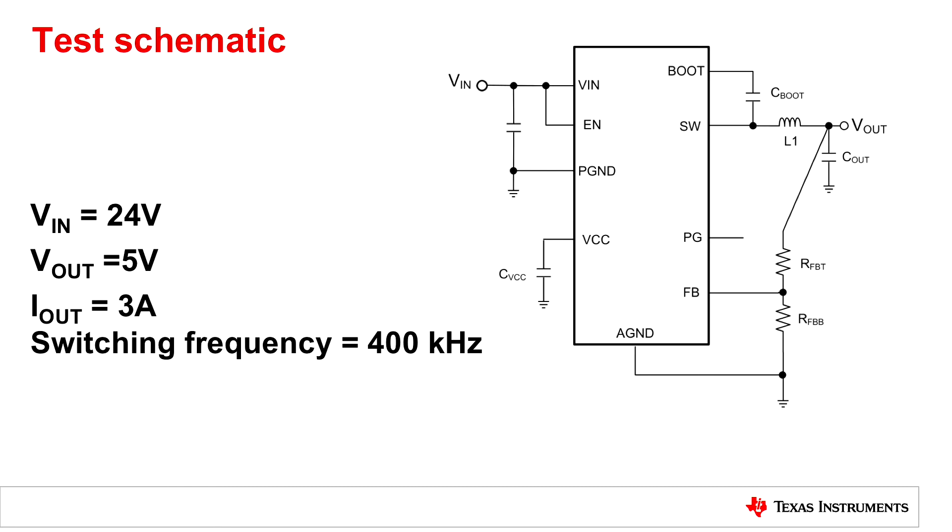The application we'll be looking at is 24 volts in, 5 volts out, and 3 amps of load current. This is very typical for an industrial type application with a 400 kilohertz switching frequency.